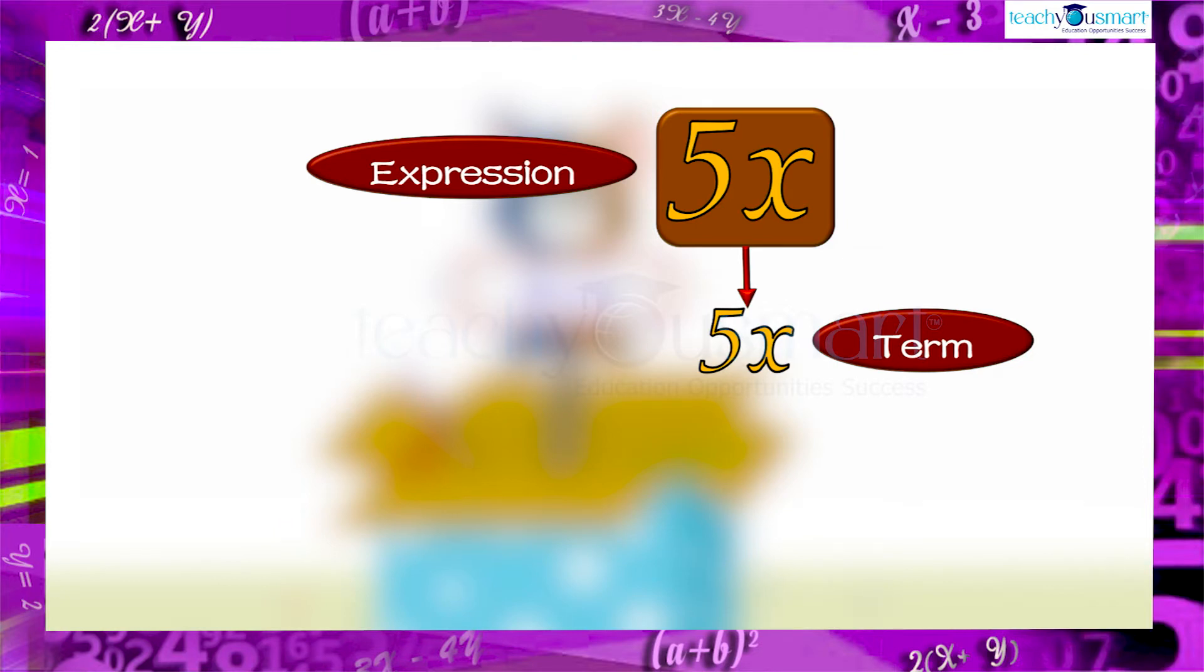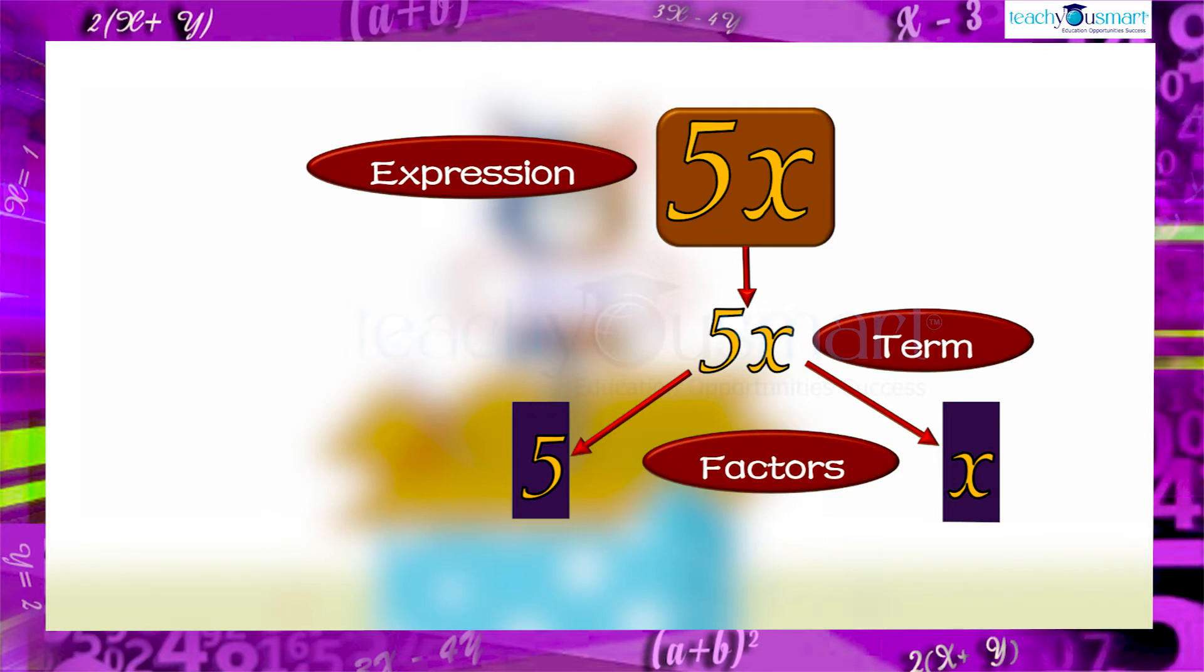So in the expression 5x, there is only one term 5x, and the factors are 5 and x. Here, 5 is multiplied by the variable x, so 5 is called the numerical coefficient of x.